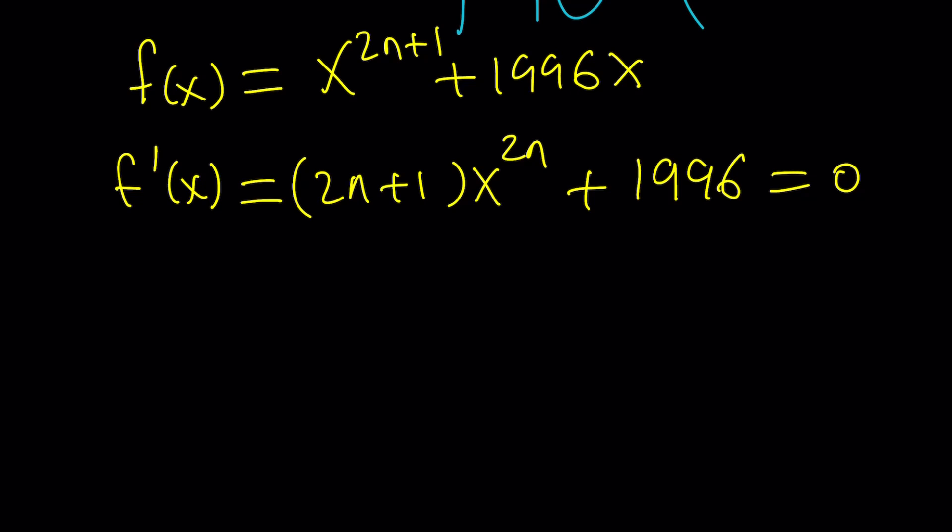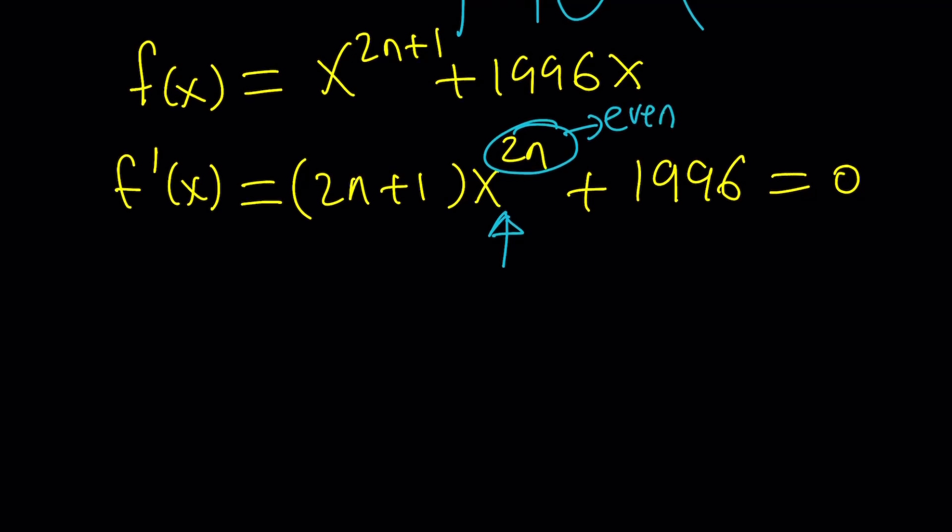This equation has no real solutions. Why? Because x to the power 2n is even, and 2n plus 1 is odd. But this is positive—remember n is greater than zero—so you add a positive number to another positive number, you can never get zero. So no solution to f prime, which means this graph has no critical points. What does that mean? In other words, it's either always increasing or always decreasing.